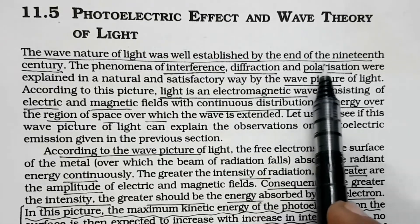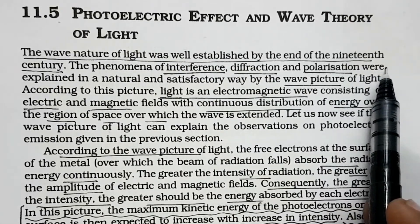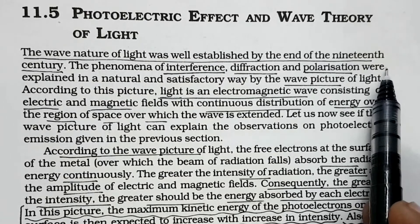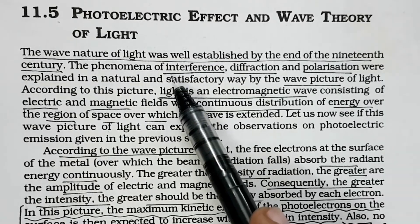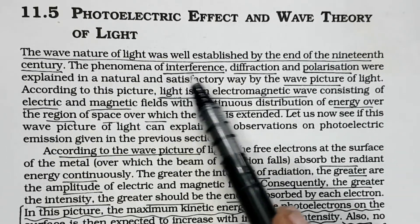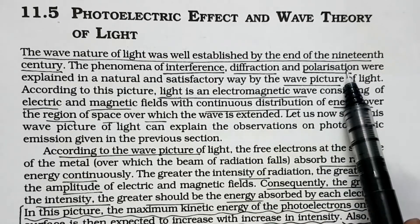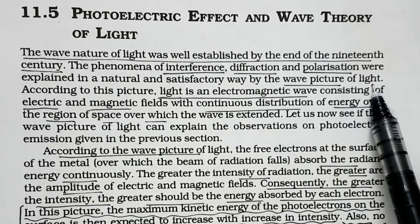In the 19th century, wave theory explained very well the phenomena like interference, diffraction, and polarization. And the wave picture of light was established strongly.